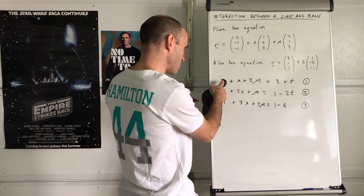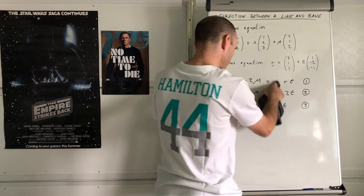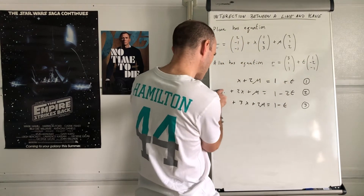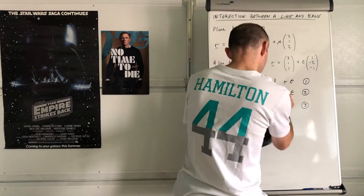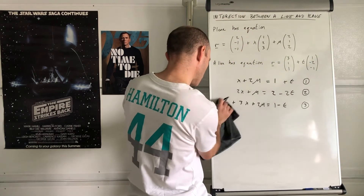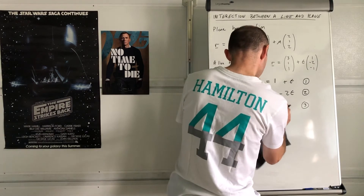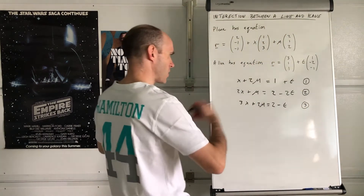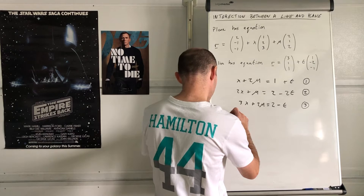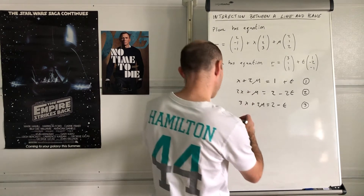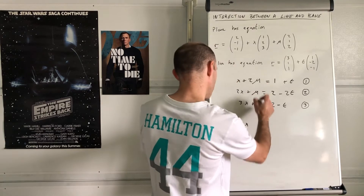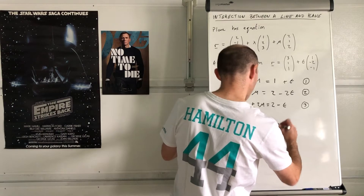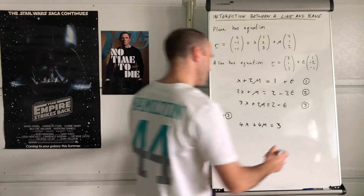Rearranging: bring the constants to one side. Then add equations 1 and 3 together: λ + 3λ = 4λ, 2μ + 2μ = 4μ, and the t terms cancel, leaving 4λ + 4μ = 3. Call this equation 4. Each time you get a new equation, number it so you don't get confused.